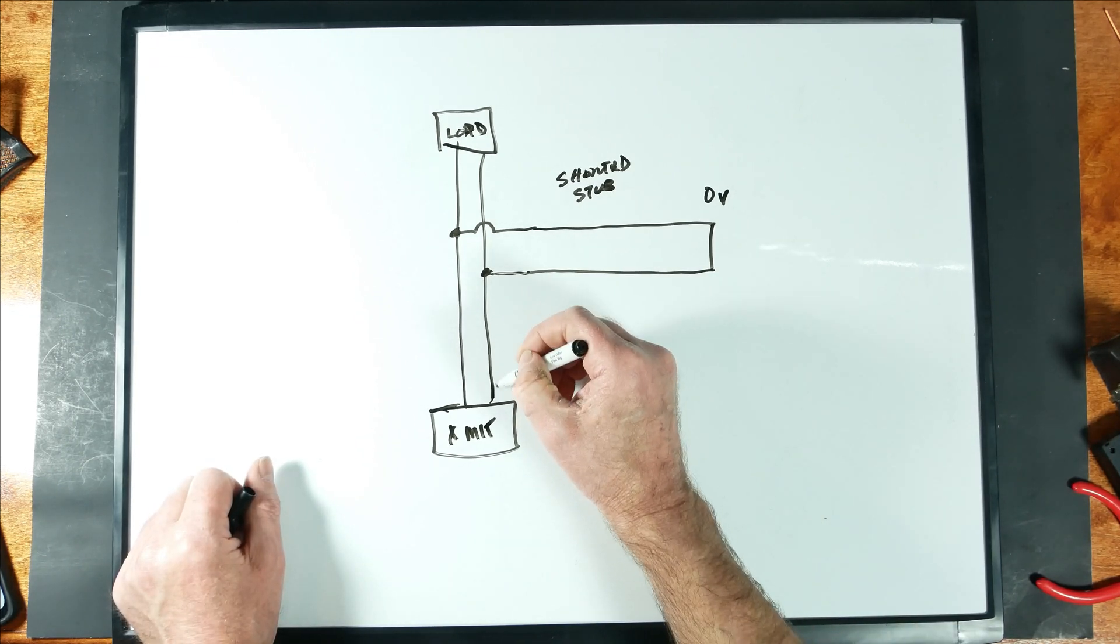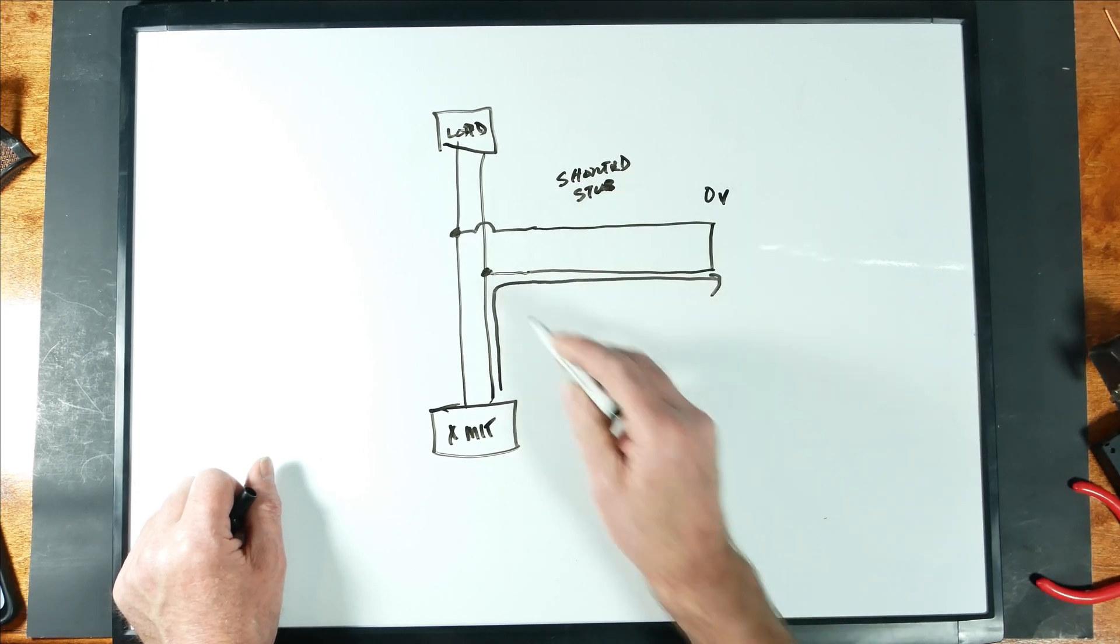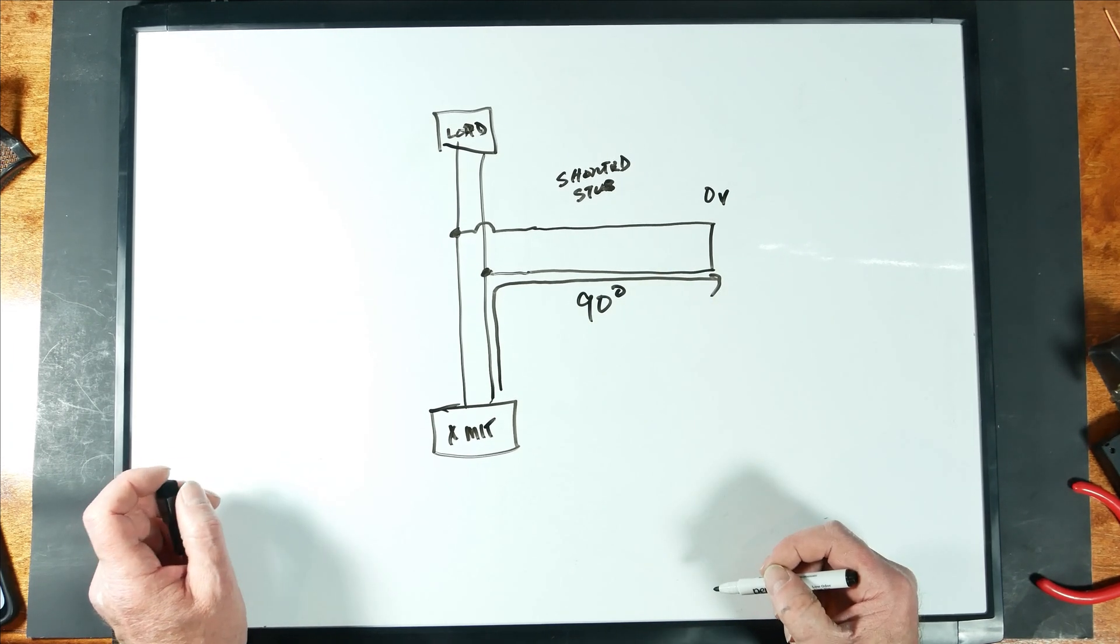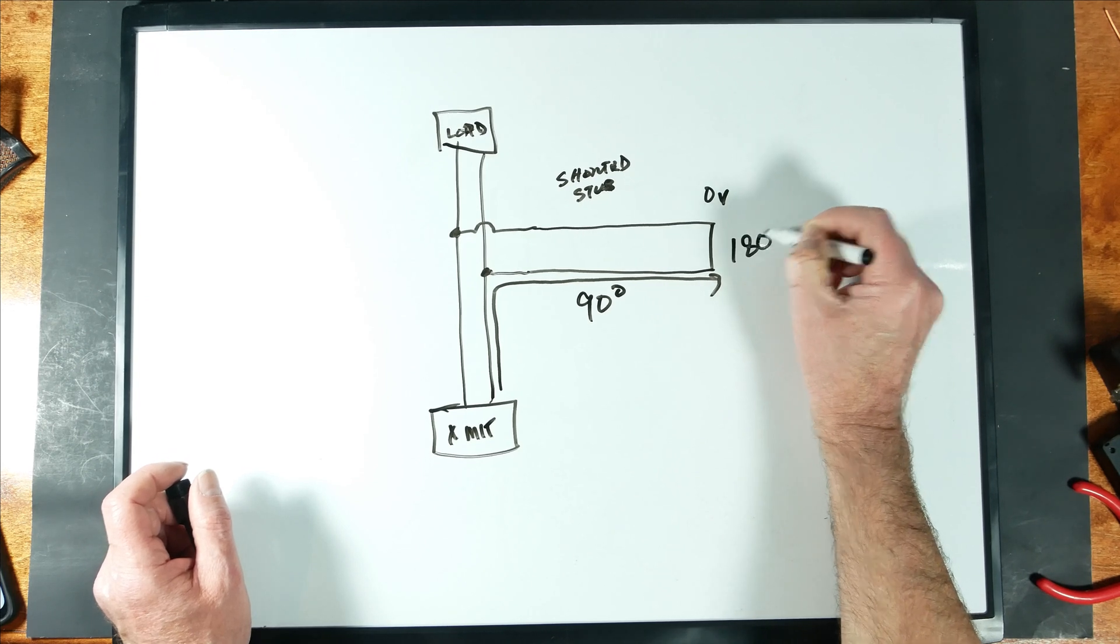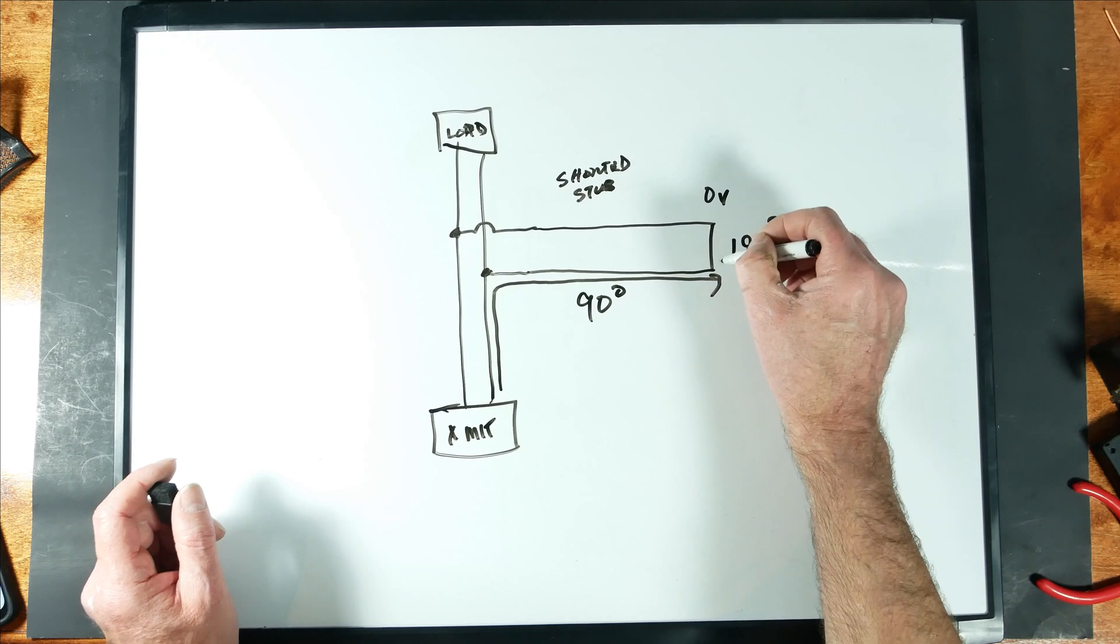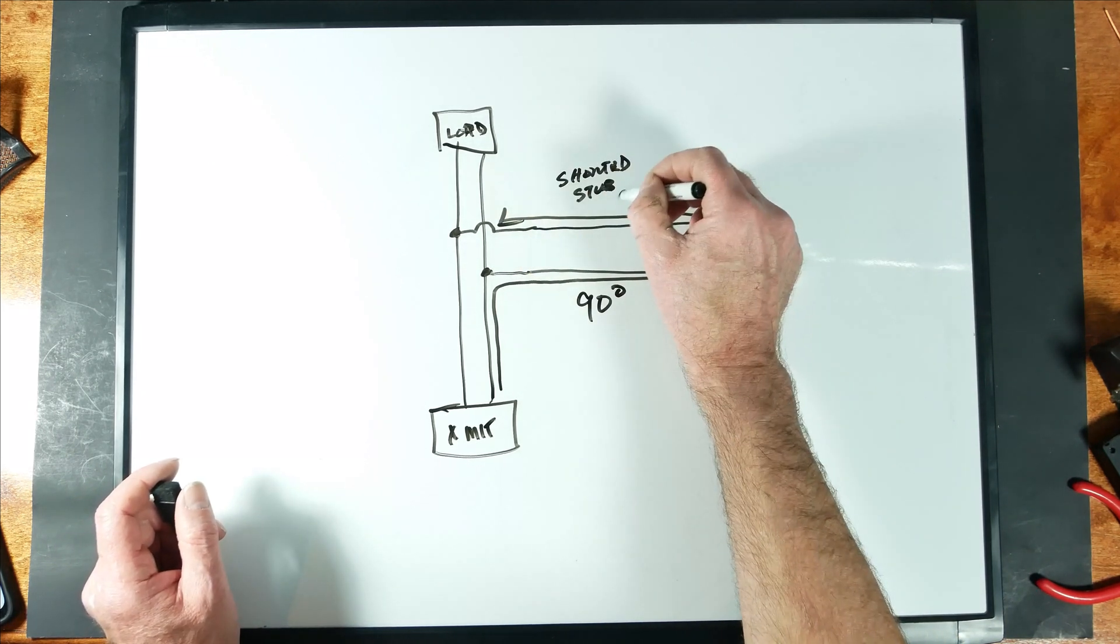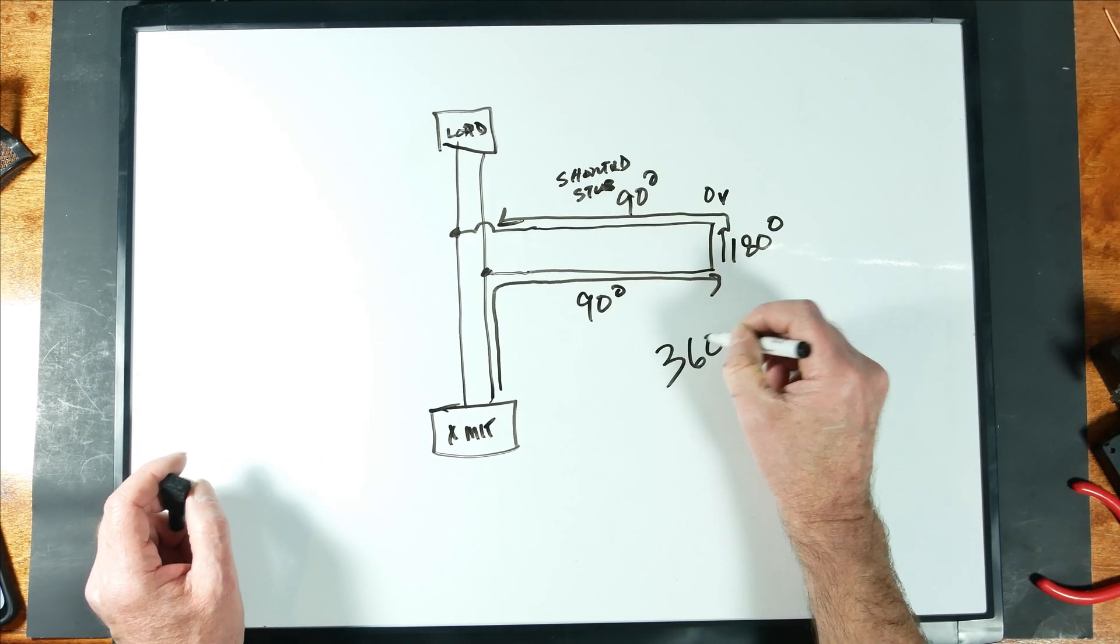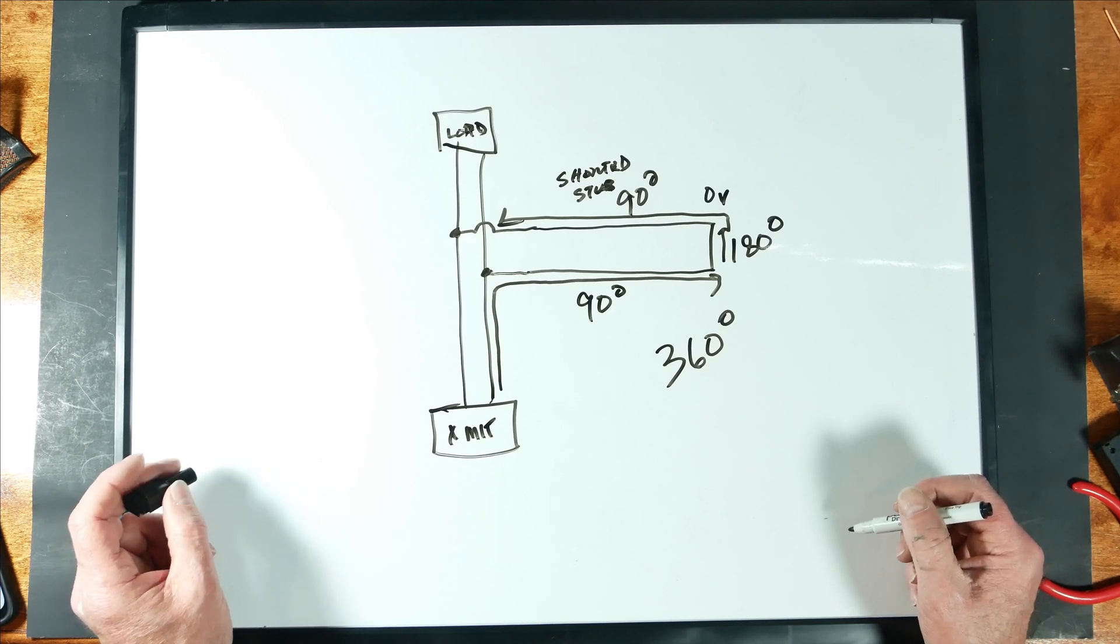When the RF travels down this stub, to get from here to here, it takes 90 degrees of waveform. And when it reaches the end of this, this short becomes 180 degrees of phase transformation. And then on the way back, we have another 90 degrees. And that adds up to 360 degrees. We're essentially back where we started.